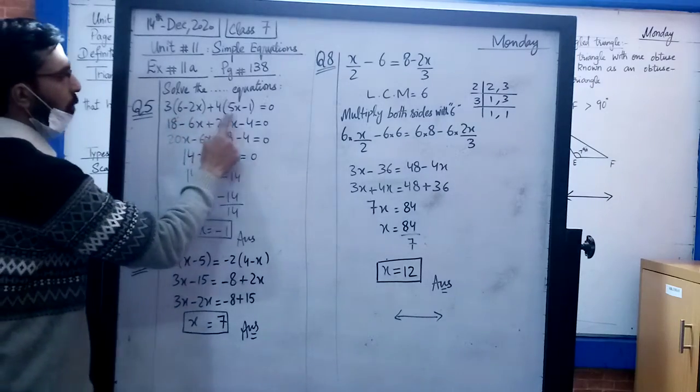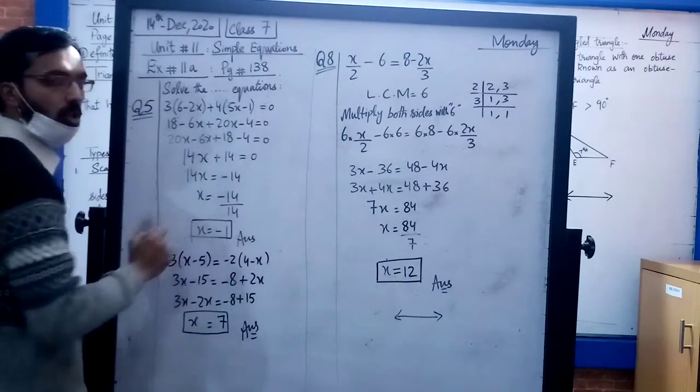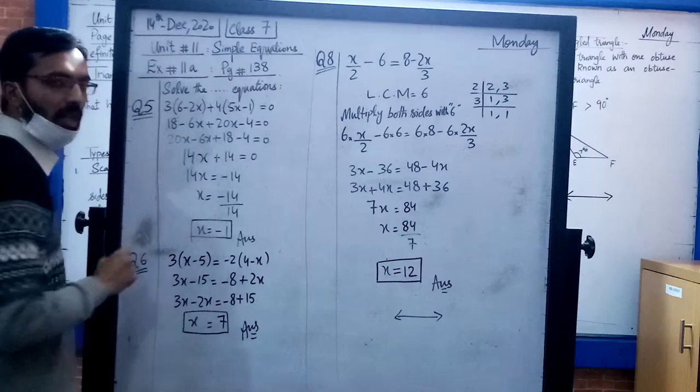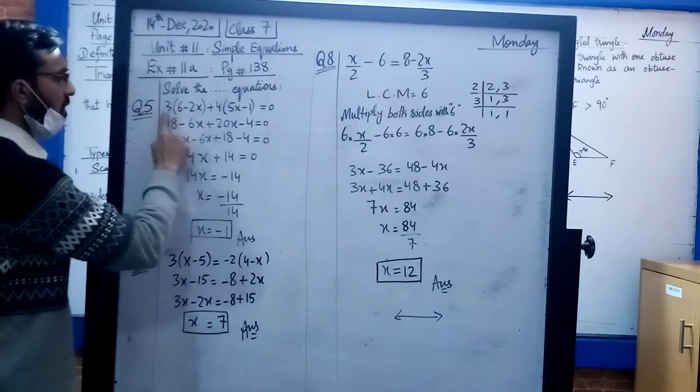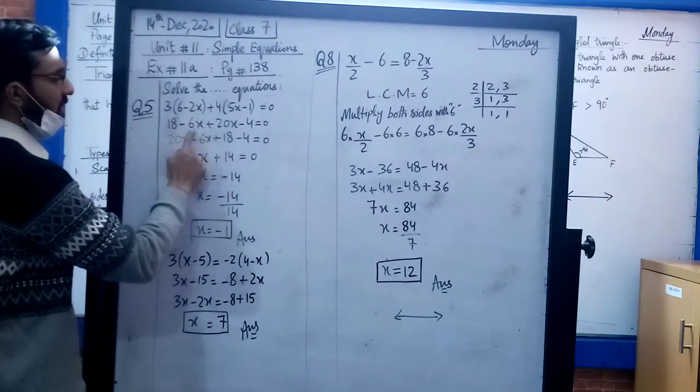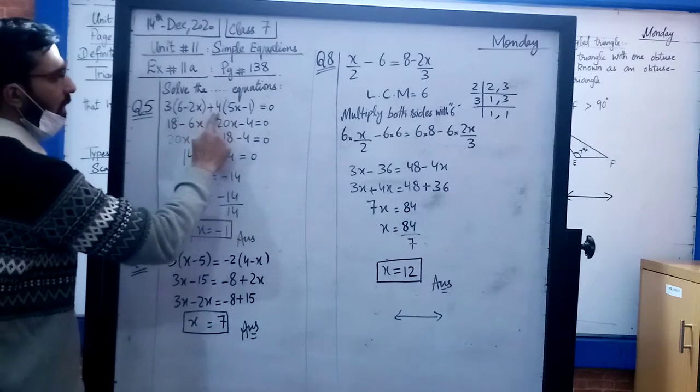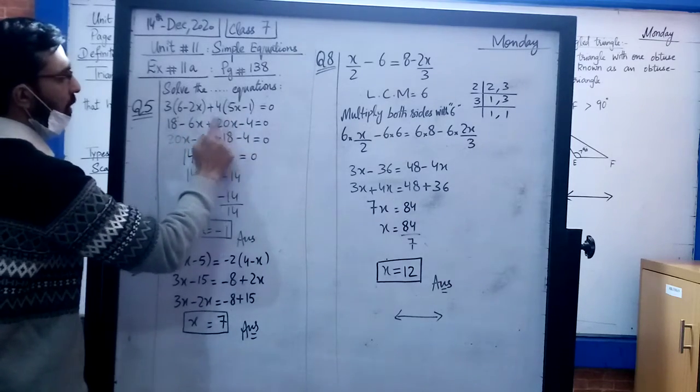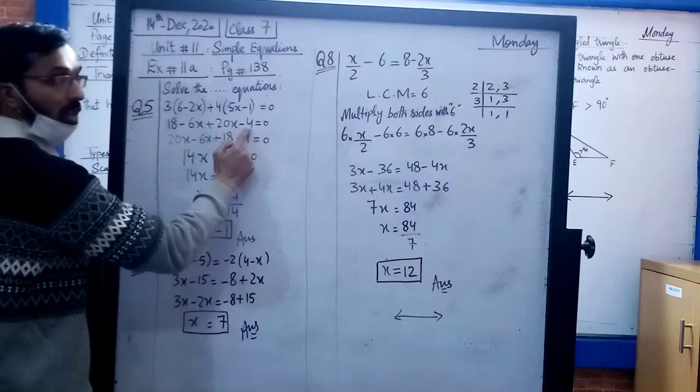First equation: 3(6-2x) + 4(5x-1) = 0. Let's solve it to find x. It's very simple. First multiply: 3 into 6 is 18, minus 6x, then 4 into 5x is 20x, minus 4 into 1 is minus 4, equals 0.